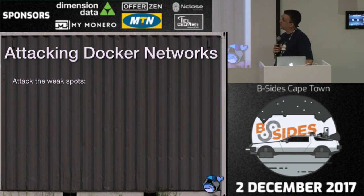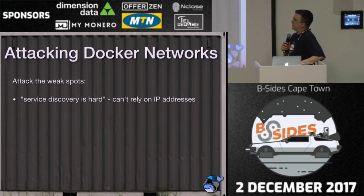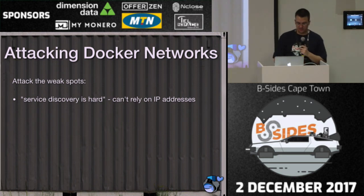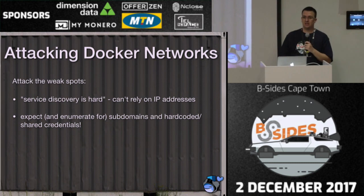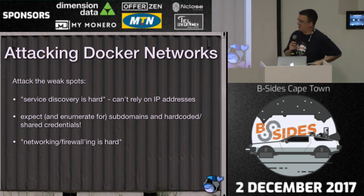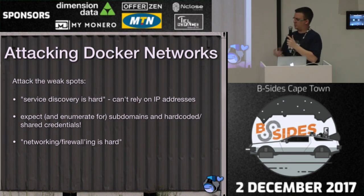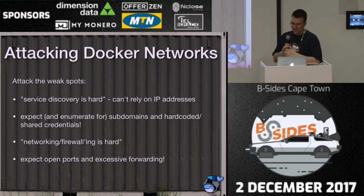Running Docker in production is not easy. Service discovery is hard, especially with microservices — how does one container know where another one is? You can't rely on IP addresses since Docker will reassign them. People set up subdomains pointing to proxies — look for them, enumerate them. Look for hard-coded and shared credentials in environment variables. Networking and firewalling is really hard when you've got a host with its own IP, a load balancer's network range, and containers that are bridging and hosting. What do people do? They just open everything — share the ports, open it to the internet. So definitely scan ports because everything is going to be connected to everything else in a really bad way.